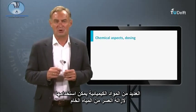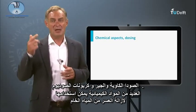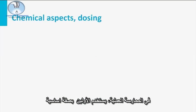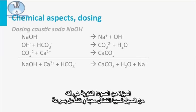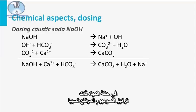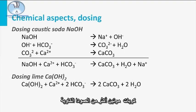Several chemicals can be used for the softening of raw water: caustic soda, lime, and soda ash. In practice, mainly the first two are used. The advantage of caustic soda is that it is relatively easy to handle and reacts rapidly. The disadvantage, however, is that sodium is added to the water, which can be problematic in case of waters with a relatively high sodium concentration. Lime is more difficult to handle, reacts slower, leading to higher reactors, and produces two times more pellets than caustic soda.